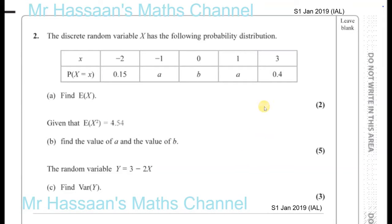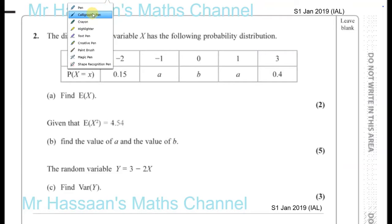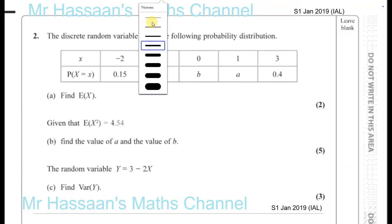Question number two from Statistics 1 S1 January 2019 — a question about discrete random variables. The discrete random variable X has the following probability distribution, and we need to find the expected value of X. At first sight you might think: how are we going to do this with these unknown items, and how can we find the expected value of X when it's going to be the product of these all added together? Well, it will work out okay even though it might not seem so at first.